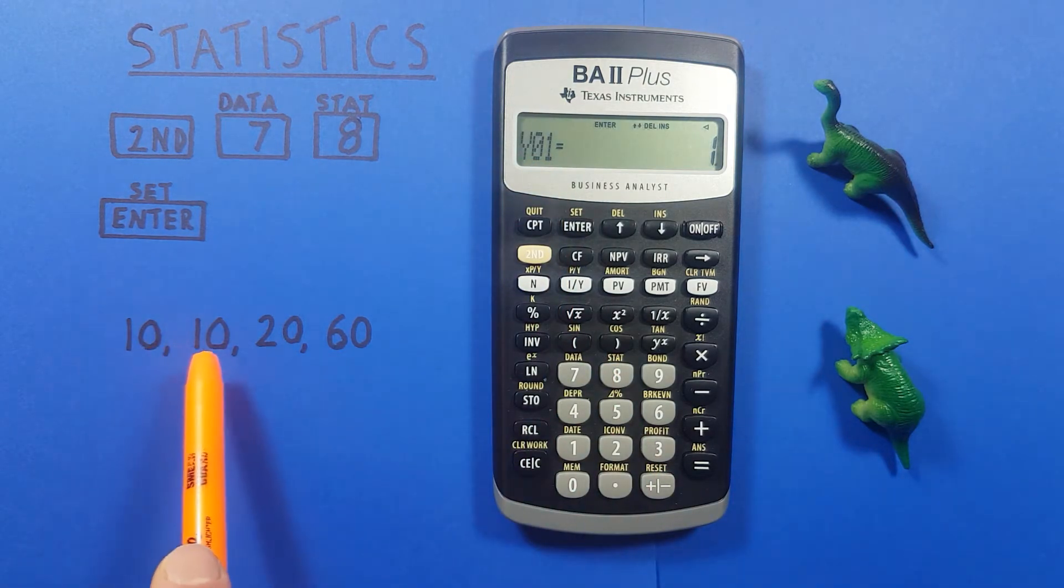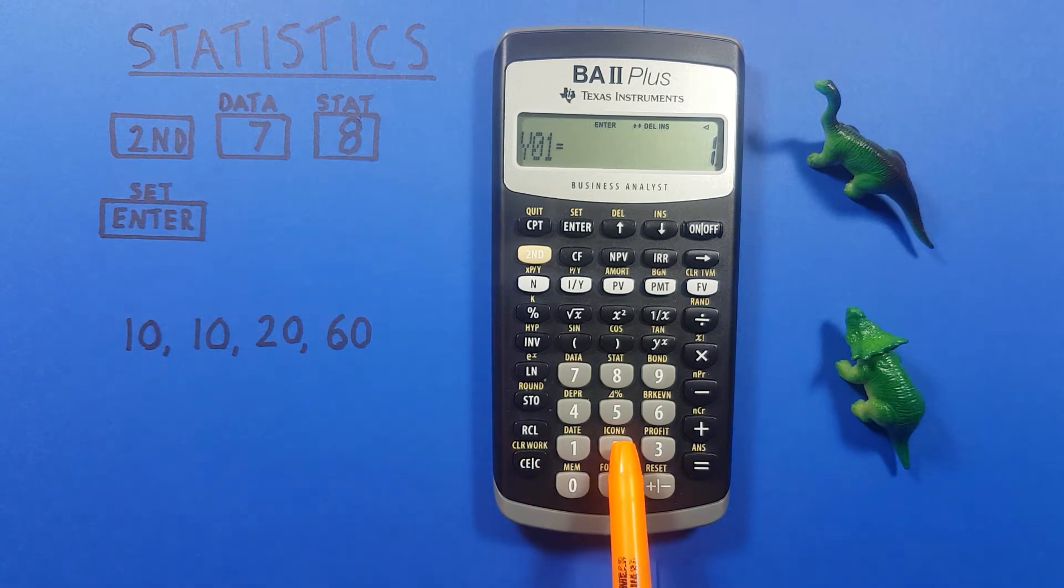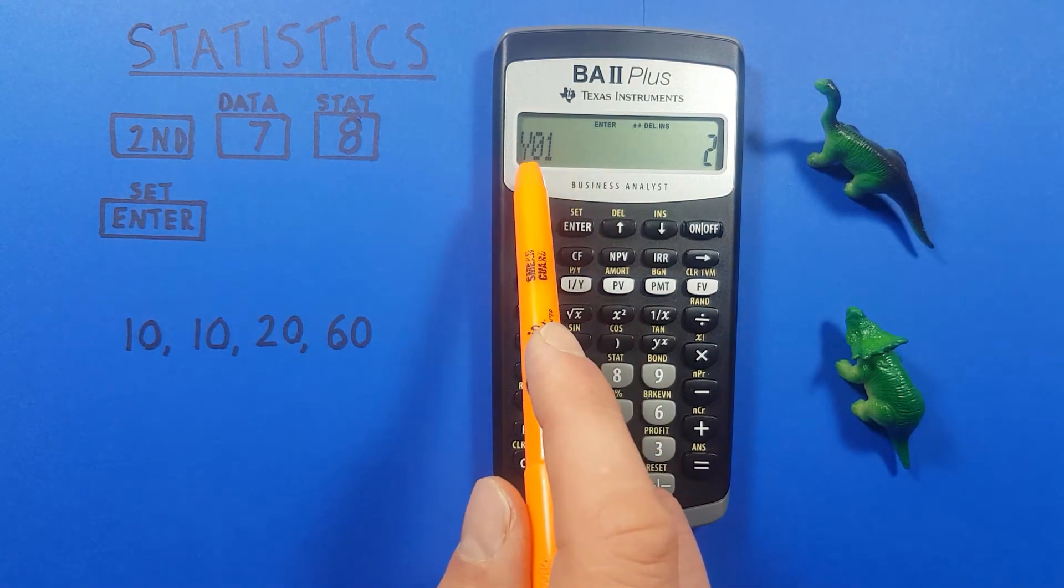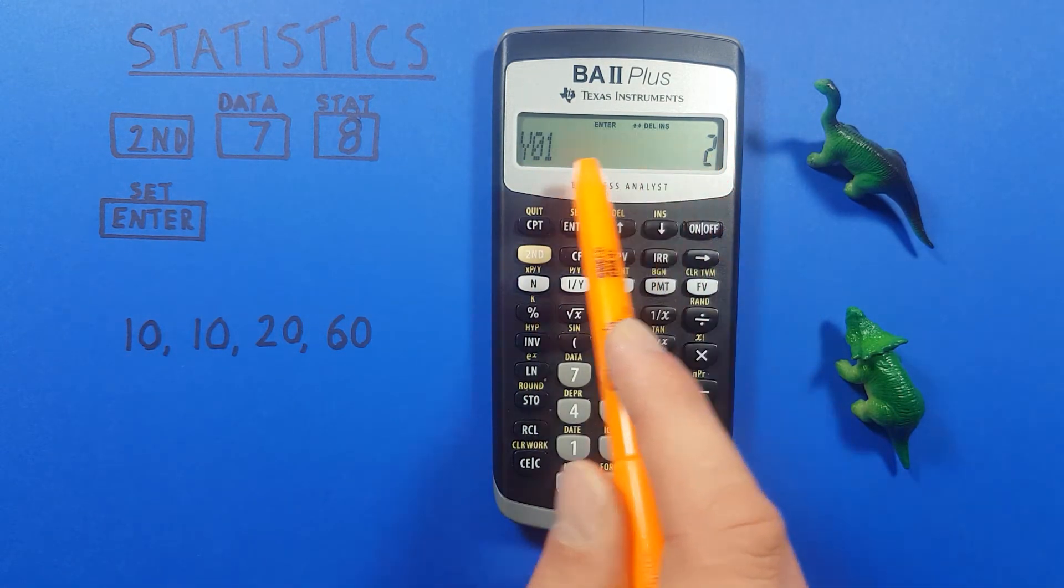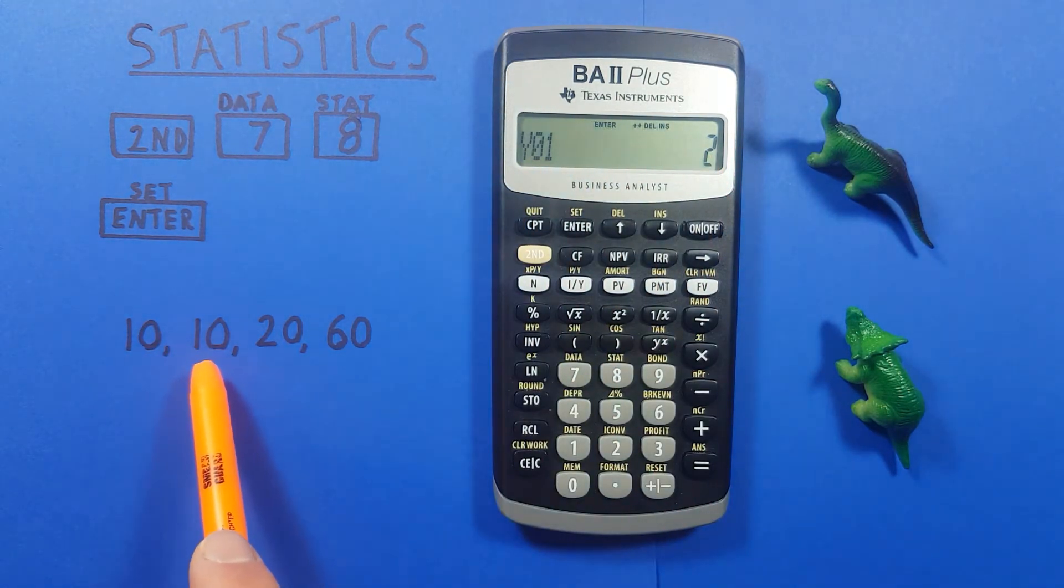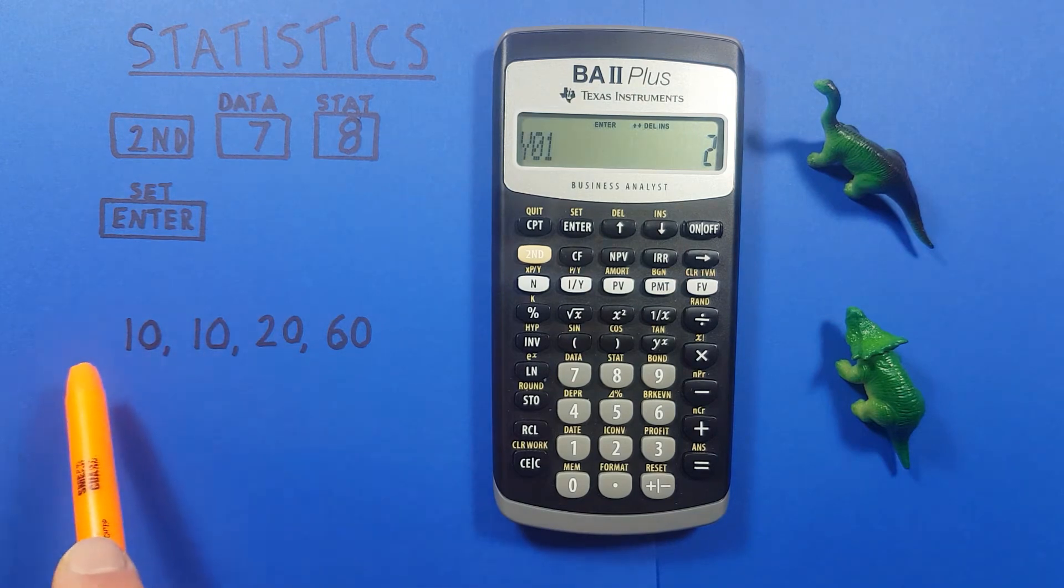We see 10 occurs twice in our data set so if we enter two here this tells our calculator that our x1 which was 10 occurs twice. So we don't have to enter that 10 in twice or three times or four times if it occurs that many times.